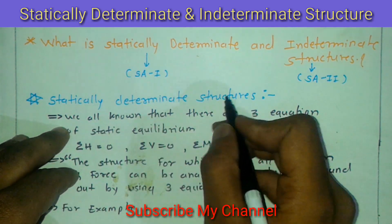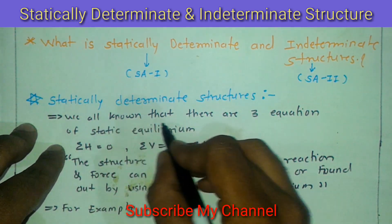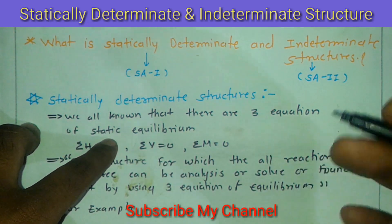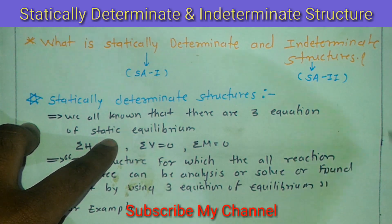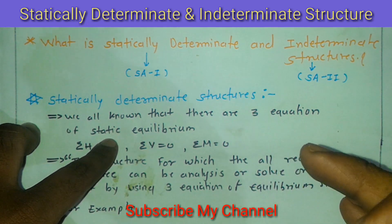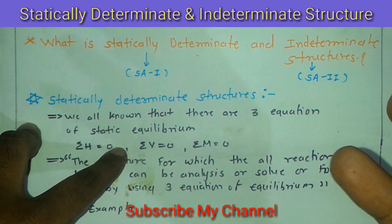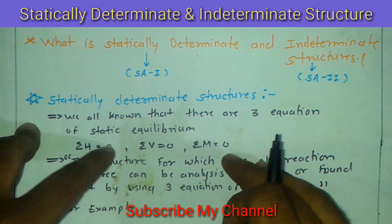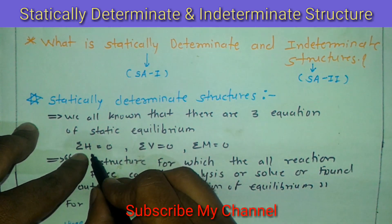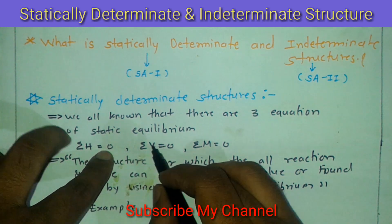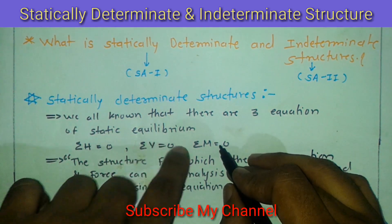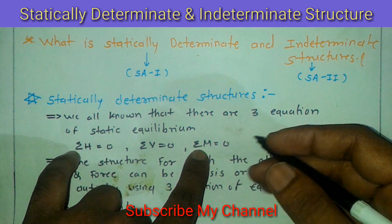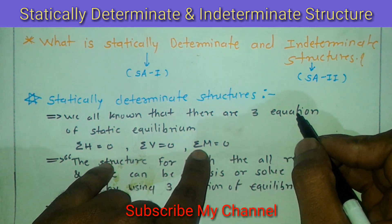As we all know, there are three equations of static equilibrium. Equilibrium means to make the body in a stable condition. We have three equations, or three conditions, that must be satisfied to make the body in a stable or static equilibrium condition. Those three conditions are: summation of horizontal forces must be equal to zero, summation of vertical forces must be equal to zero, and summation of moments must also be equal to zero.